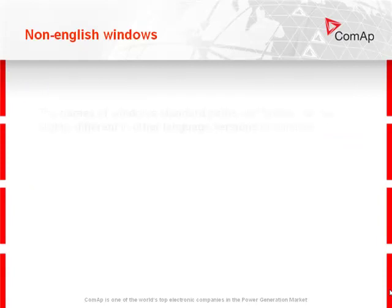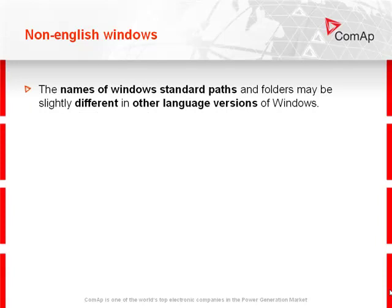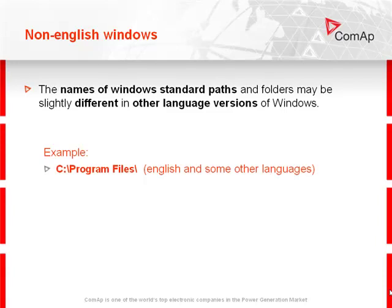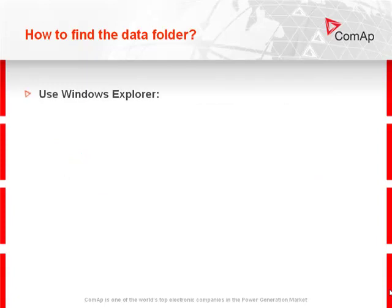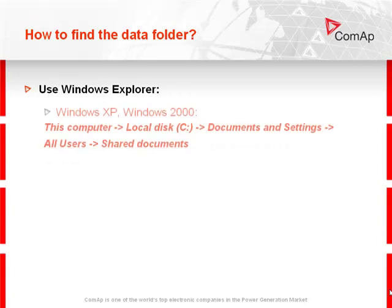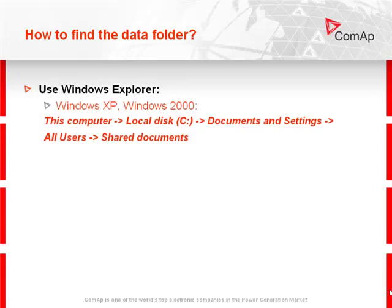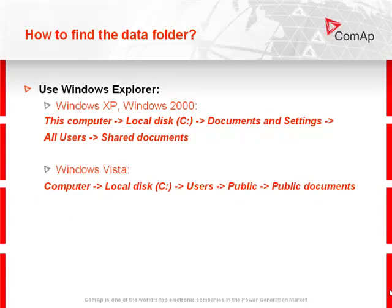In non-English Windows, the names of Windows standard paths and folders may be slightly different in other language versions. For example, Program Files is used in English and some other languages, while Programme is used in German. To find the data folder, use Windows Explorer. In Windows XP and Windows 2000: This Computer, Local Disk C, Documents and Settings or Users, Shared Documents. In Windows Vista: Computer, Local Disk C, Users, Public, Public Documents.